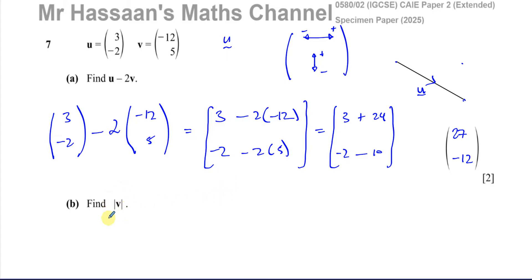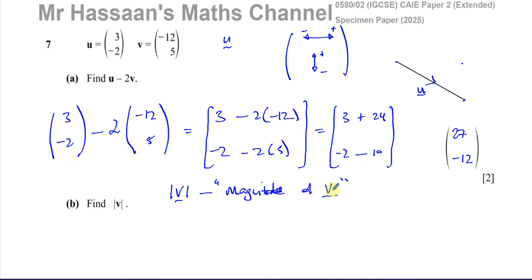Now we need to find |v|, which means the magnitude of vector v — that is, how long the vector is. A vector has both a magnitude (its length) and a direction. We want to find how long vector v is. We have v = (-12, 5), and we need to think about how to calculate its magnitude.